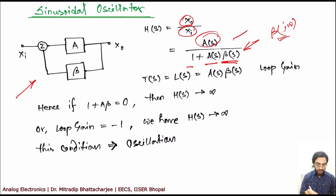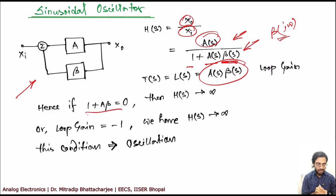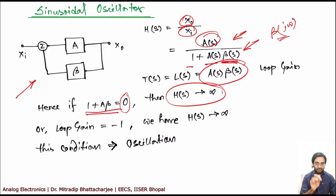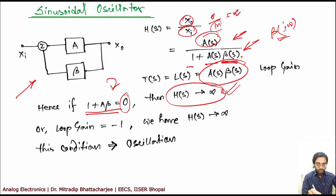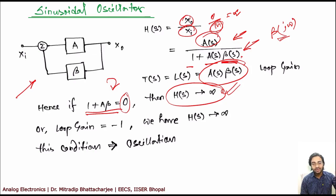The loop gain is A(s)β(s). If we set 1 plus Aβ equal to zero, the transfer function becomes infinite. That means even if your input is zero, you are getting some finite output. This is the condition known as an oscillator — you do not put a typical input to this system but you get a certain amount of output.